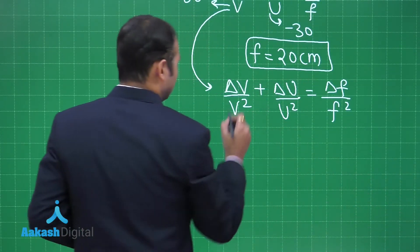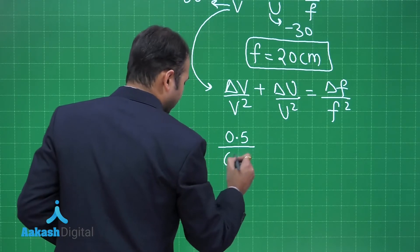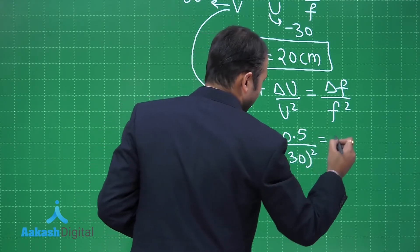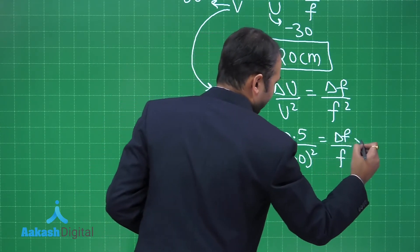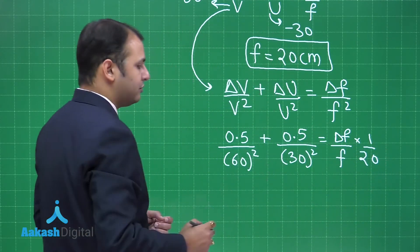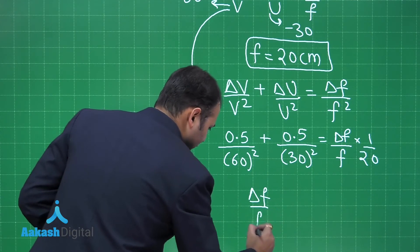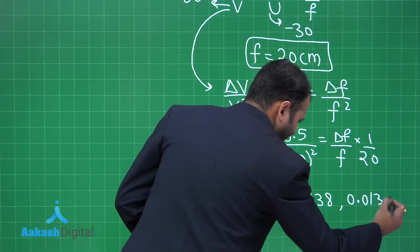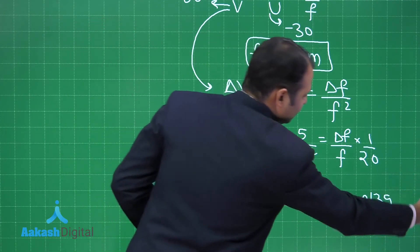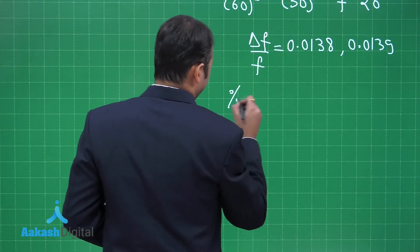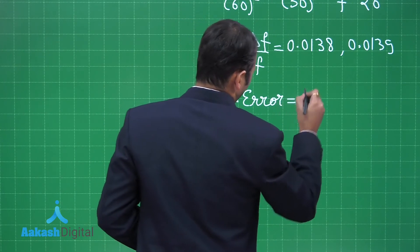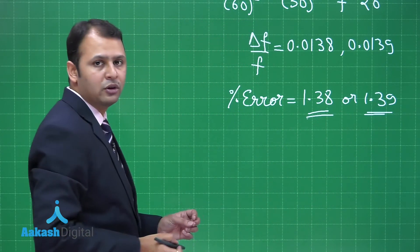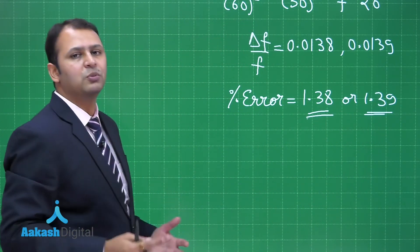Substituting values: (0.5/60²) + (0.5/30²) = Δf/f² = Δf/20². Solving, Δf/f ≈ 0.0138 or 0.0139. Therefore, the percentage error in focal length is approximately 1.38% or 1.39%. I hope you have understood the solution very well.